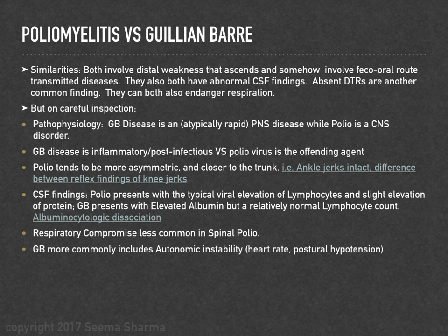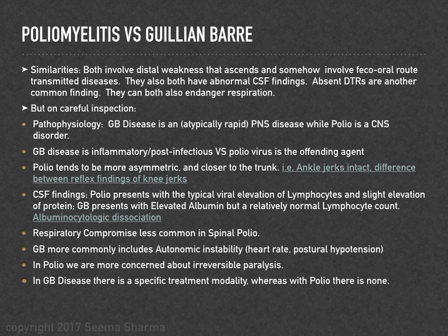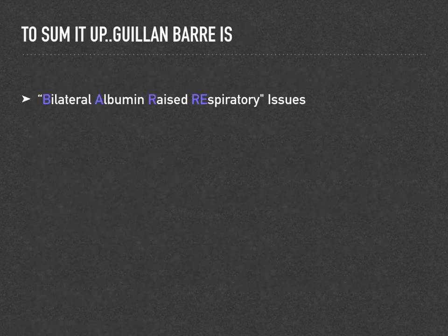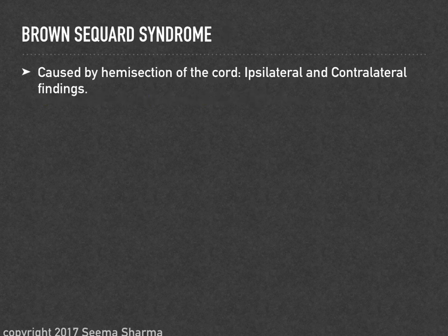Guillain-Barré commonly includes autonomic instability affecting heart rate and blood pressure. In polio, the main concern is irreversible paralysis. Guillain-Barré has specific treatments — plasmapheresis or immunoglobulin administration — whereas polio has no treatment but does have prophylaxis. Summary mnemonic for Guillain-Barré: bilateral, albumin raised, and respiratory issues.